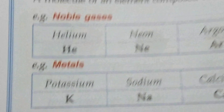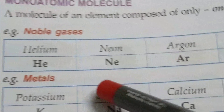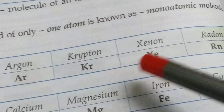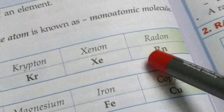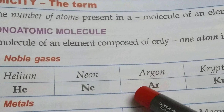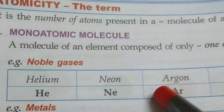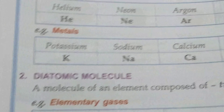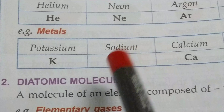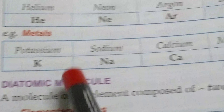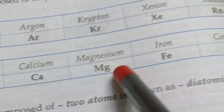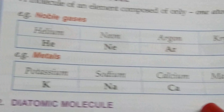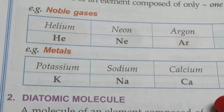Examples of monoatomic molecules: noble gases — helium, neon, argon, krypton, xenon, and radon — are monoatomic molecules. Metals are also monoatomic molecules: potassium, sodium, calcium, magnesium, iron, and copper are monoatomic molecules.